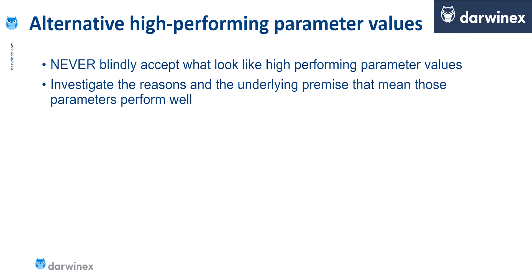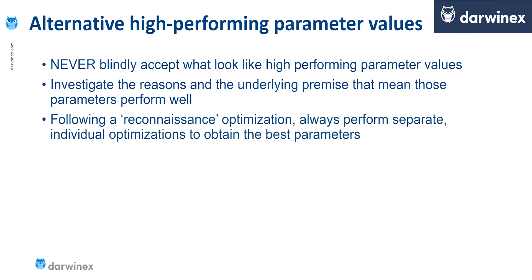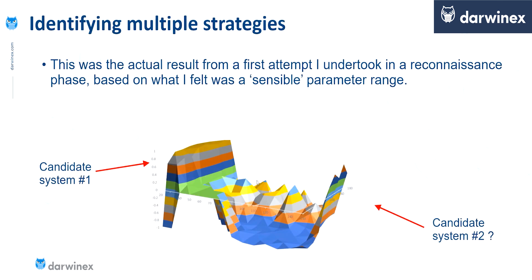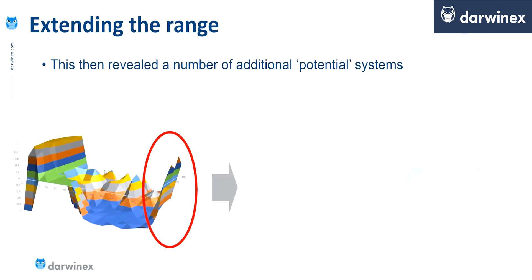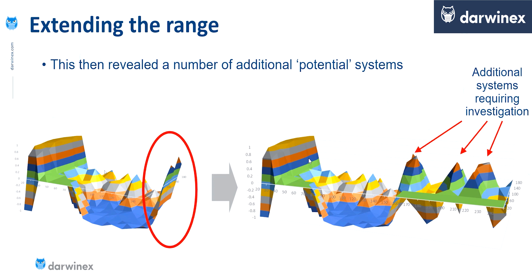I'd never condone trading any system if you didn't implicitly understand what the premise behind that system was. For absolute clarity: when you do perform one of these reconnaissance optimizations on a much wider range of parameter values than you would normally, this is purely for the purposes of identifying other potential systems — but then you'd have to run separate optimizations for each of those that you did identify. Sometimes when you do this, you'll notice towards the edge of your surface the performance starts to increase. And clearly when you see this, it's always good practice to run the optimization again, extending the parameters further to investigate that area of the surface.